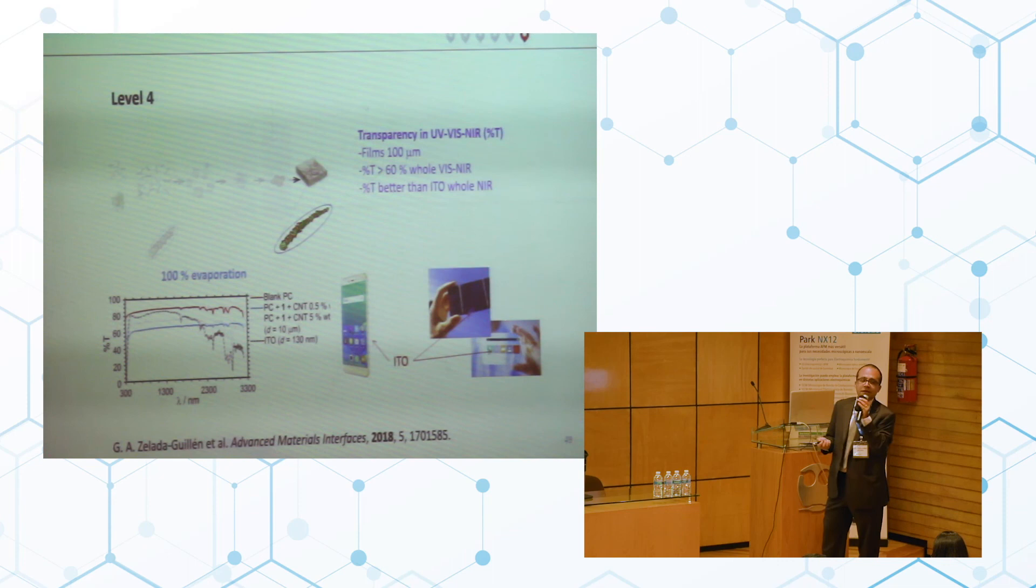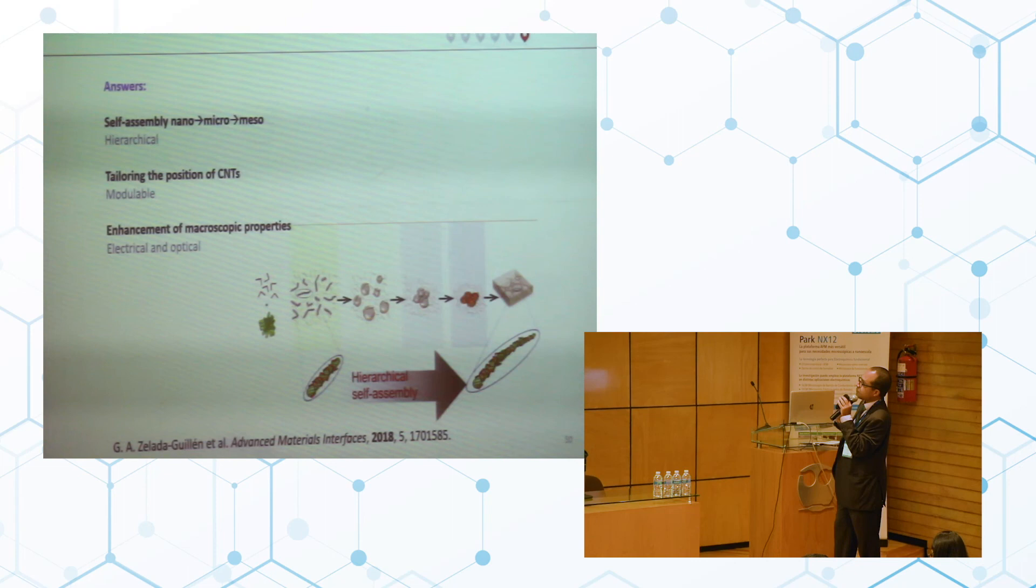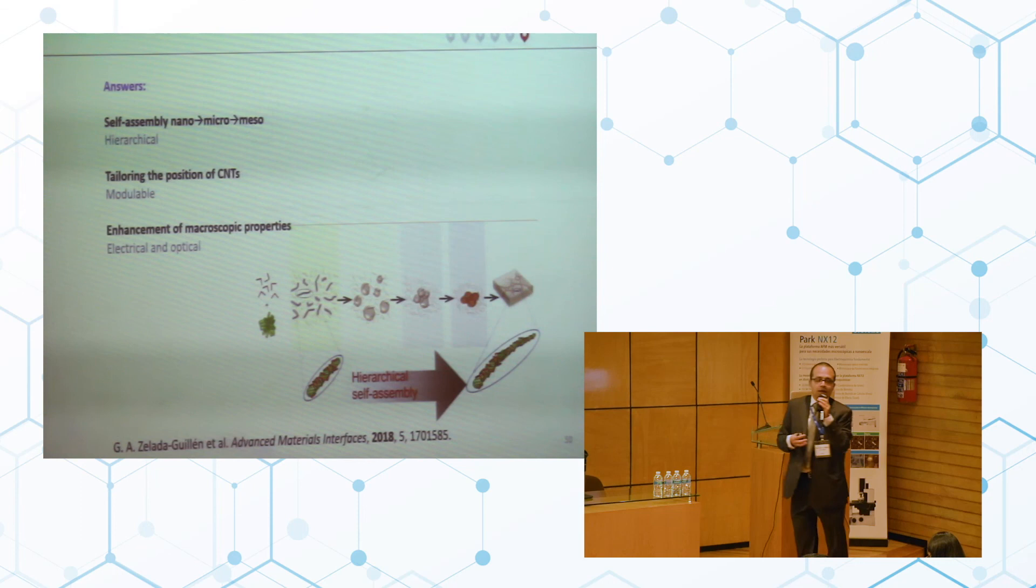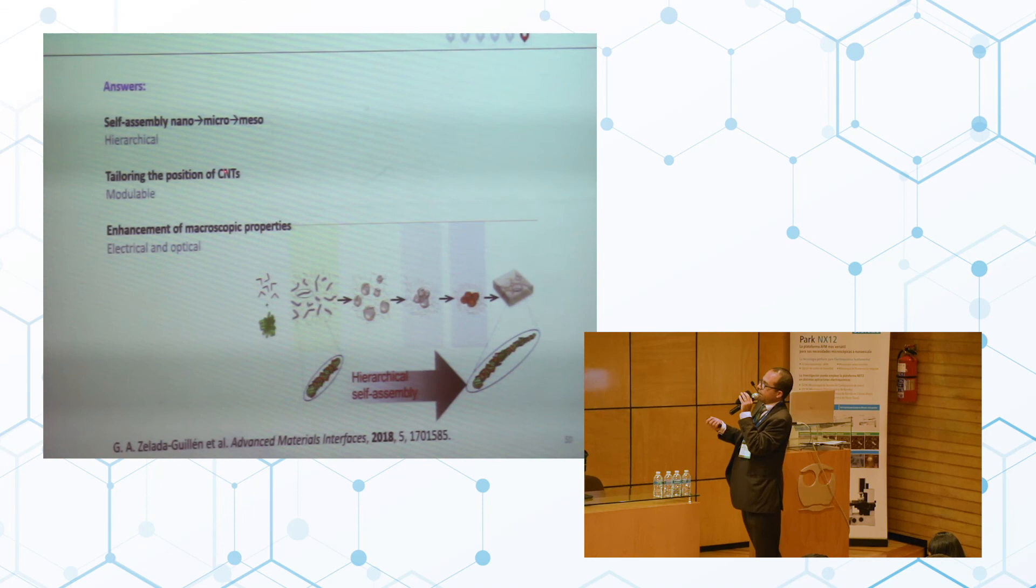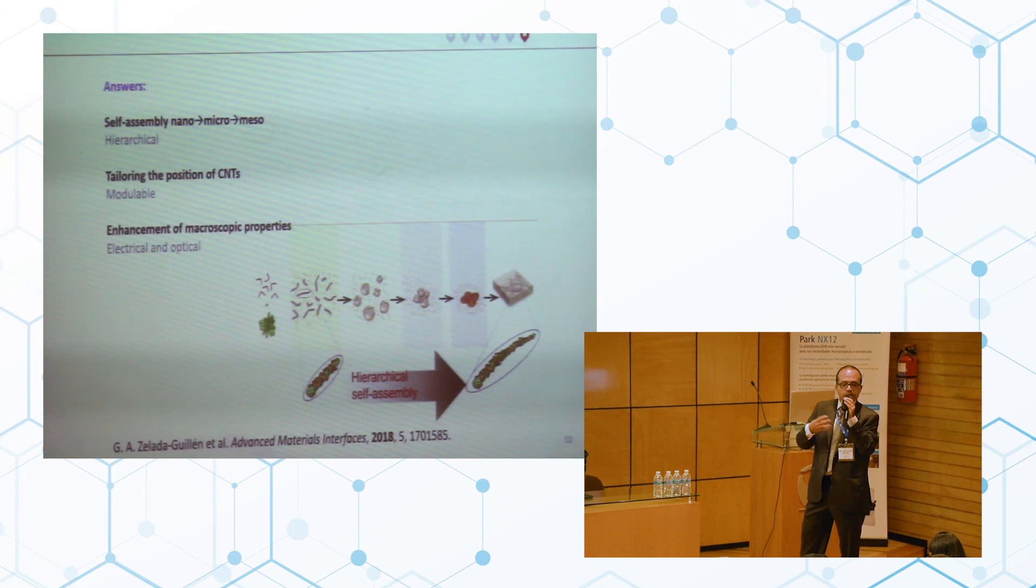So the answers to all these questions were yes, we can introduce information in one molecule to tell this guy do what we want you to do through self-assembly that can be hierarchical from the nanoscale to the microscale to the mesoscale. In this way we could tailor the position of carbon nanotubes, so you can modulate the electrical and optical properties. And also at the end enhance the macroscopic properties which will be useful for future devices.